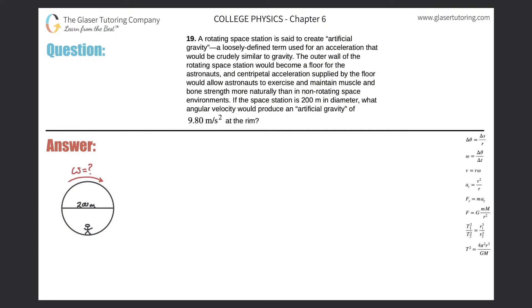Number 19. A rotating space station is said to create artificial gravity, a loosely defined term used for an acceleration that would be crudely similar to gravity.